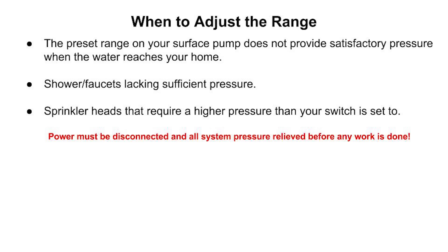For example, your surface pump is located at a lower elevation than the home or area that you need to supply water to. Raising the range will compensate for the pressure loss of the hill.